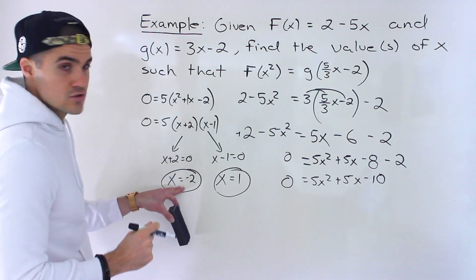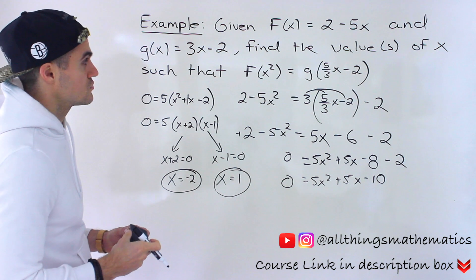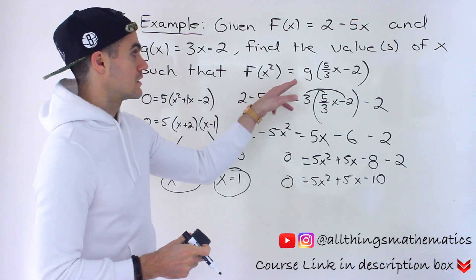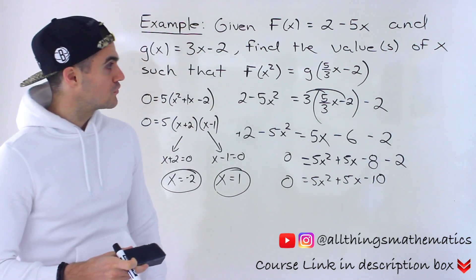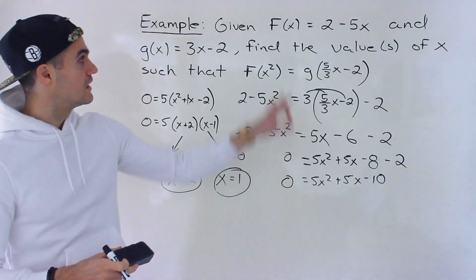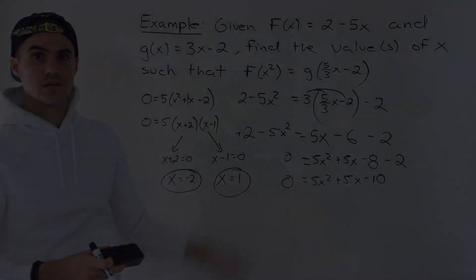So those are the two values. Those are the two solutions when f of x squared is equal to g of 5 over 3x minus 2, given f of x and g of x.